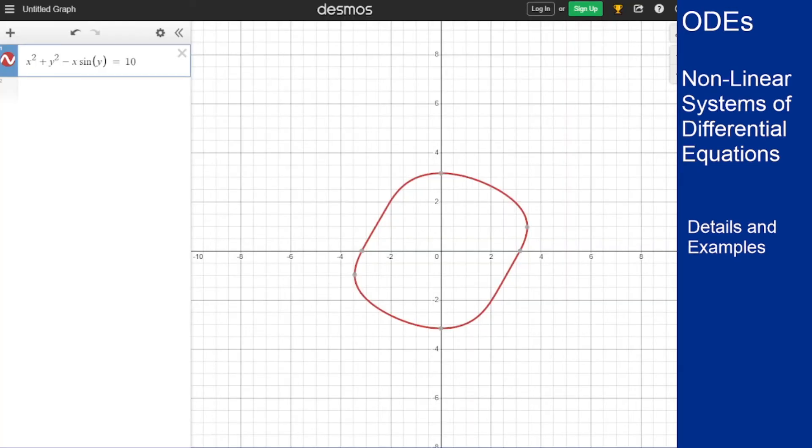So here's a Desmos graph of what that trajectory would look like. From the linear version we would have gotten ellipses around the origin, but now it's a little more of a weird shape. I can change the value here of c to move this in or out, so at 10 it's here. If I put in 30 it's way out here and looks even more wobbly.